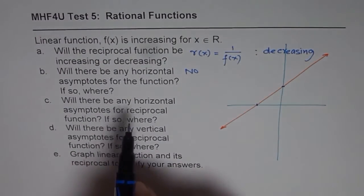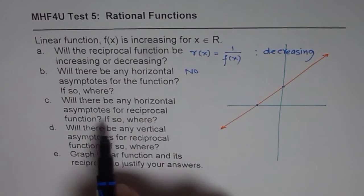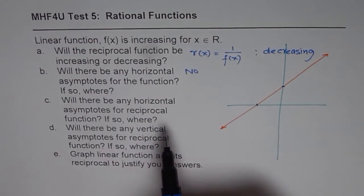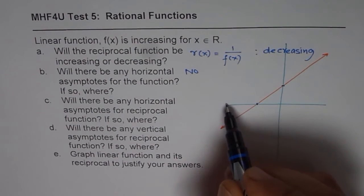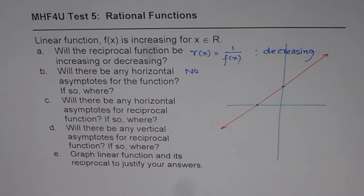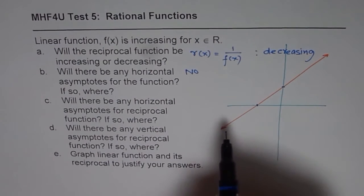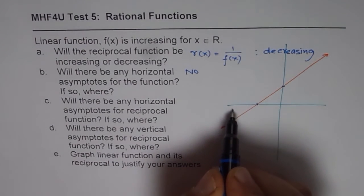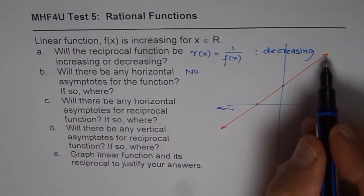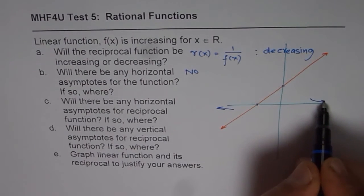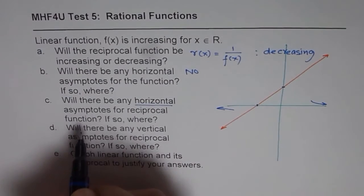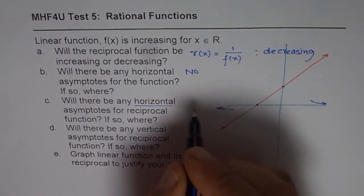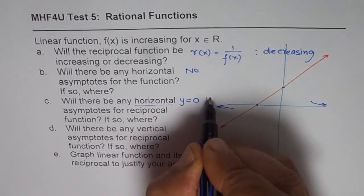Part c: will there be any horizontal asymptote for the reciprocal function? If the function is approaching negative infinity, then 1 over negative infinity is close to 0 — we are approaching but never there. Since we can never reach infinity, 1 over infinity is essentially 0. So there is a horizontal asymptote for the reciprocal. As x approaches positive infinity, 1 over positive infinity is very close to 0, so we approach 0 but are never there. Therefore there exists a horizontal asymptote at y = 0, along the x-axis.